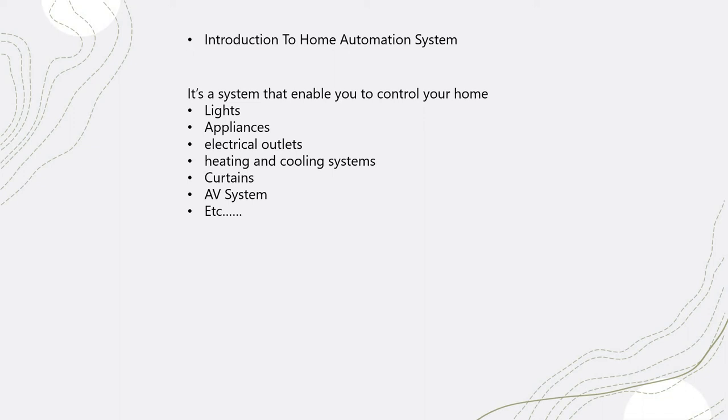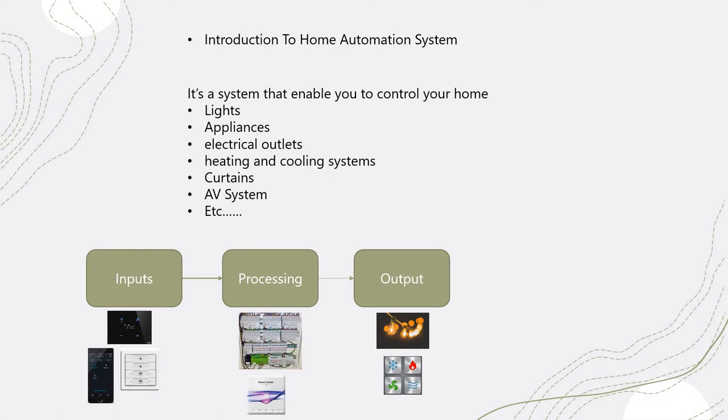So, what is home automation? Home automation is a system that allows you to control your lights, appliances, electrical outlets, heating and cooling systems, curtains, AV systems, and many other applications in your home. You can set up the system for your comfort and easy control. It could be for energy saving purposes, security reasons, and about 60% for comfort of life.